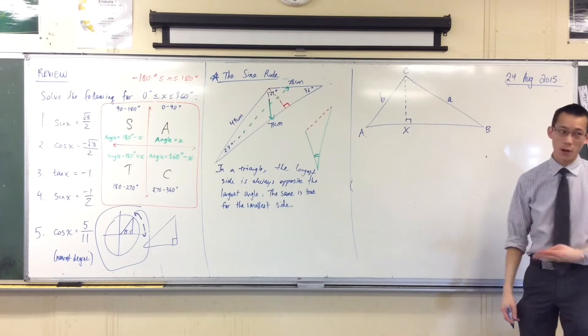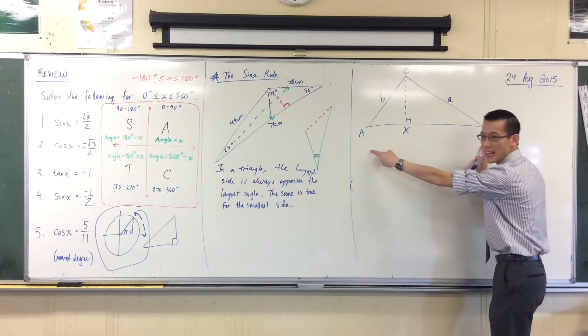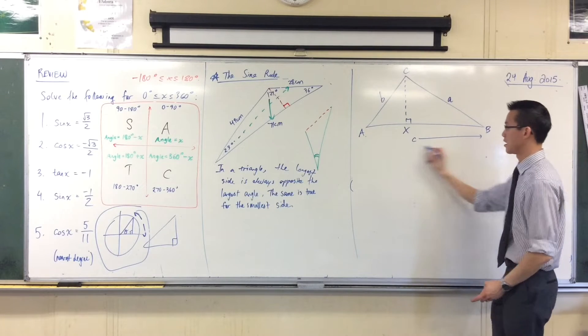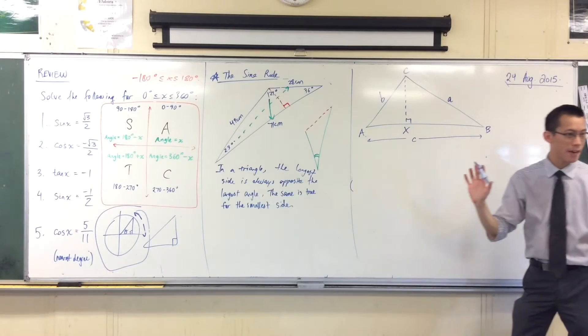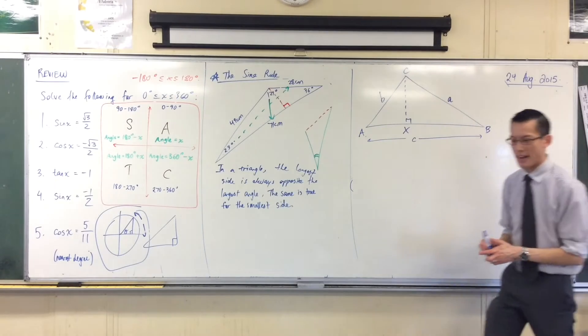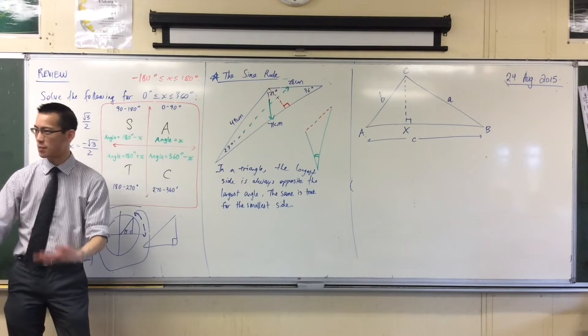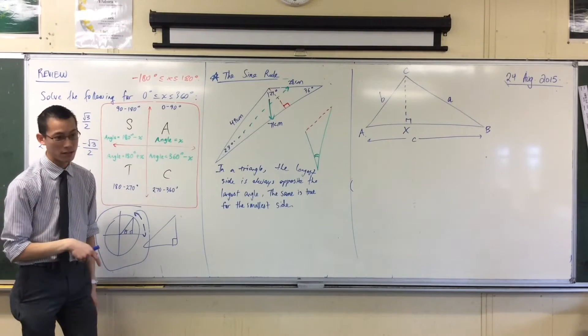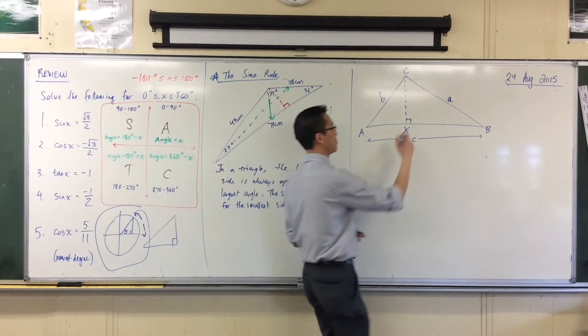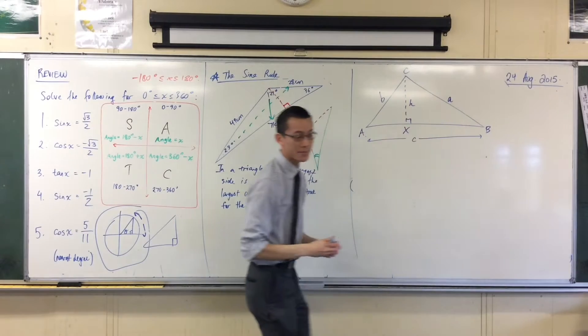That would mean, if I was following the pattern, that this guy down here should be lowercase c. So are you happy with that? Alright, now there's one last length we need, this intermediary length that we've introduced, this perpendicular height. Since it's a height, I'm going to call it h for height, because I haven't used h yet.